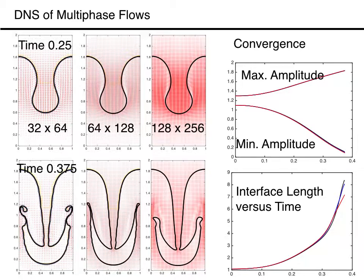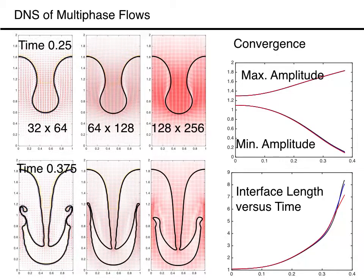We can quantify the evolution in several different ways, but here we do the simplest thing possible. In the top frame on the right, we plot the maximum and minimum of the interface versus time, and see that those are essentially identical for all three grids. Below, we plot the total length of the interface versus time, and here we see that while the total lengths on the coarser grids are similar, the finest grid results in a shorter interface, as we expect from the interface shape shown on the left.